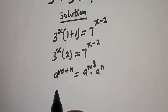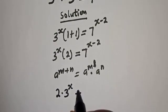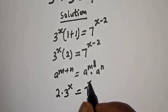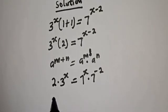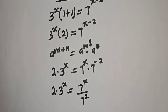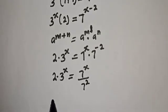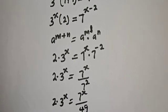Then we have 2 multiplied by 3 raised to power s is equal to 7 raised to power s multiplied by 7 raised to power minus 2. So this is 2 multiplied by 3 raised to power s is equal to 7 raised to power s over 7 squared, which is 49.